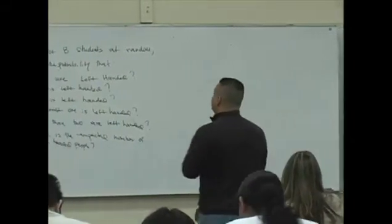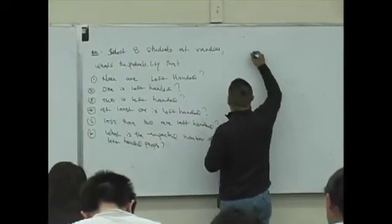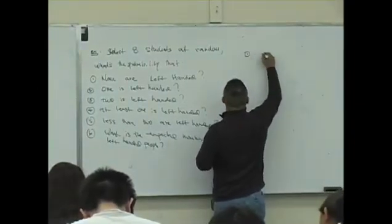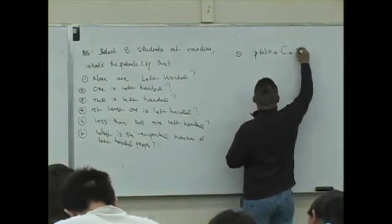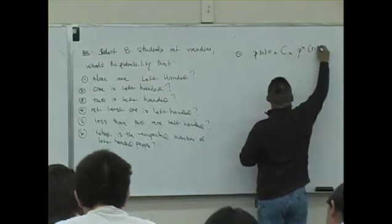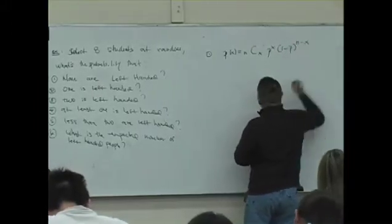So what's the formula? P of x is what? n C x, p to the x, 1 minus p to the n minus x.